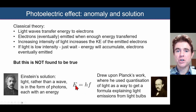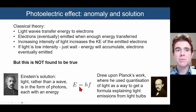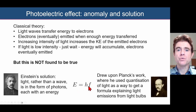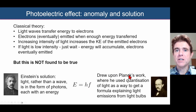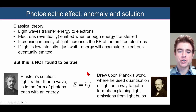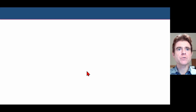Instead of thinking about light as a wave, if we consider light as photons, each photon has a particular energy given by a very simple formula. The energy of a photon — a quantum of light — is simply proportional to the frequency of the light, and the constant of proportionality is Planck's constant h.